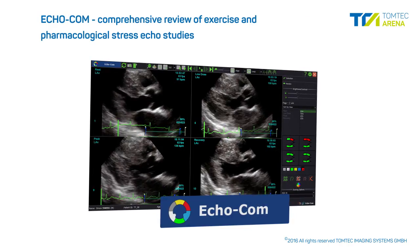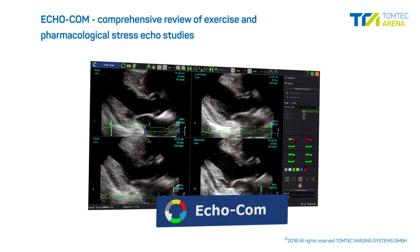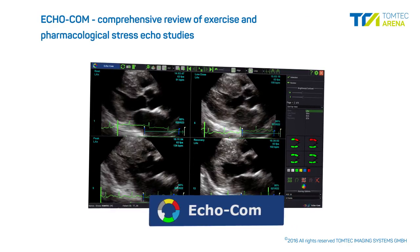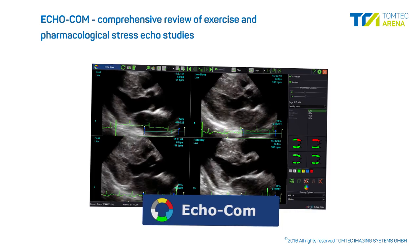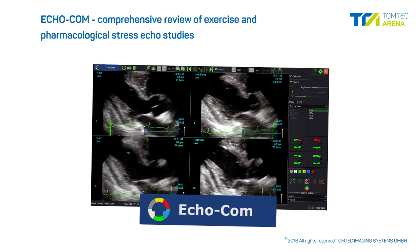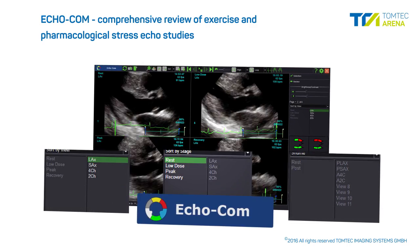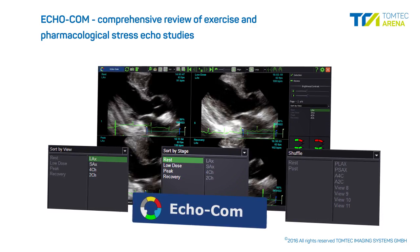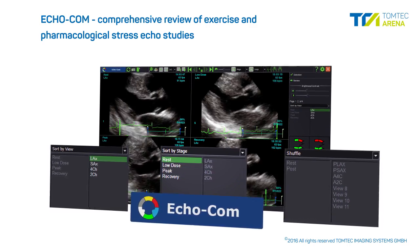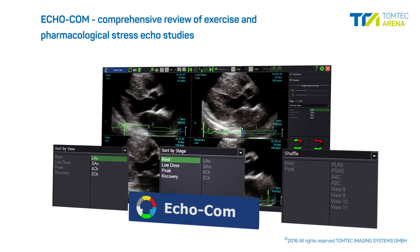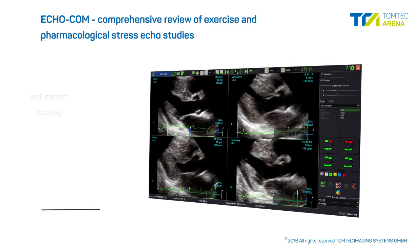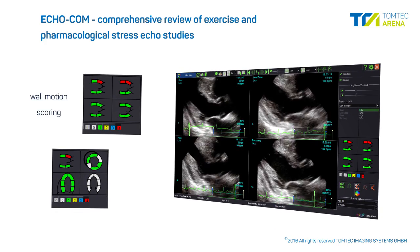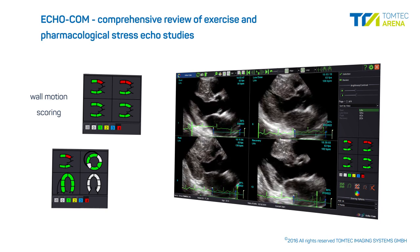ECHO-COM provides a comprehensive review of exercise and pharmacological stress echo studies. Automatically arranged stress echo loops by view or stage and the shuffle mode enable quick and intuitive image review. An easy-to-use wall motion scoring is used to document all findings.